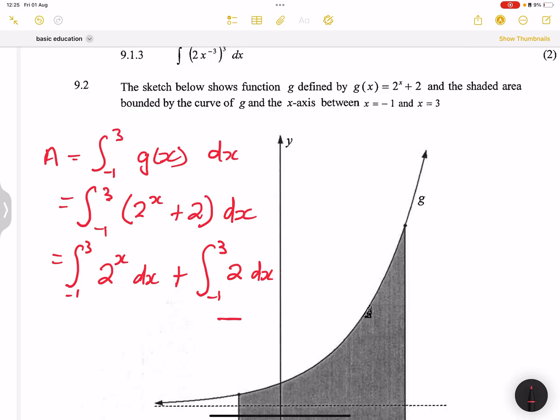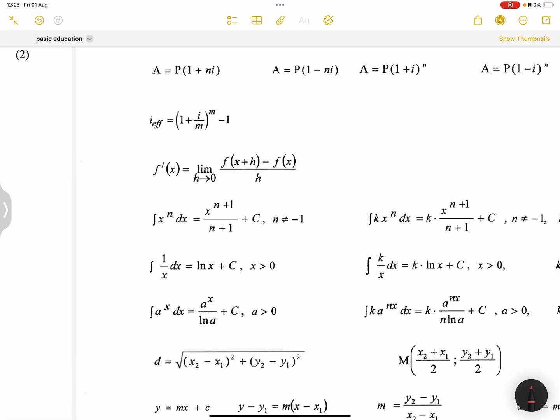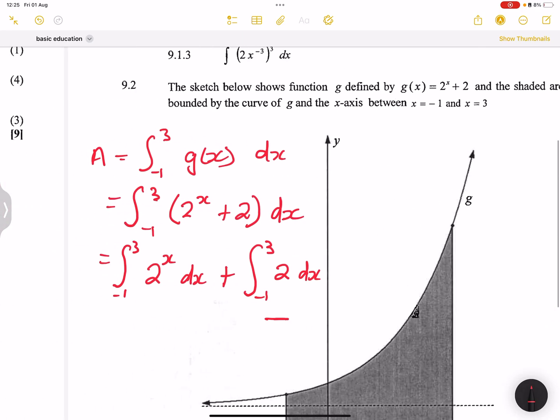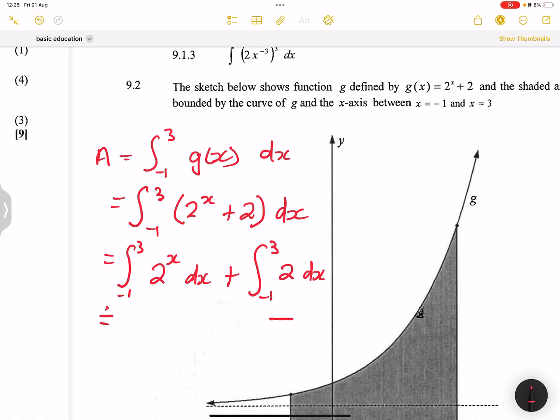So when you go back to your list of integrals, anytime we are taking the integral of a to the exponent of x, this is going to give us a to the exponent x divided by ln of a. So this will give us 2 exponent of x divided by ln of 2 plus the integral of this just simply becomes 2x.